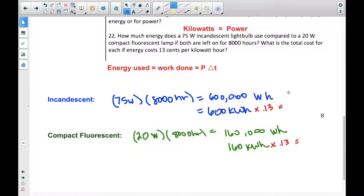And so we multiply it out. And the incandescent comes out to be about $78. And the compact fluorescent comes out to be about $20.80.